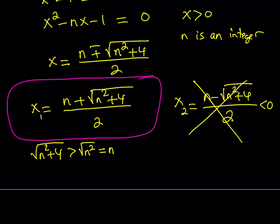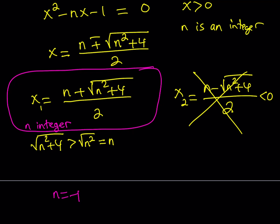This solution is valid when n is any integer. Let's check a negative integer — say n equals negative 1. Then x = (−1 + √(1+4))/2 = (−1 + √5)/2, which is a positive quantity, since the square root expression is always greater in absolute value. So we don't have a problem with negative integers either. That's the solution: x = (n + √(n²+4))/2 where n is an integer — these are the x values that satisfy our equation.